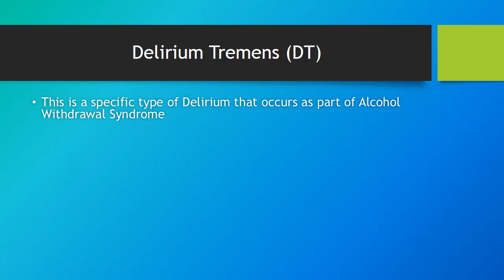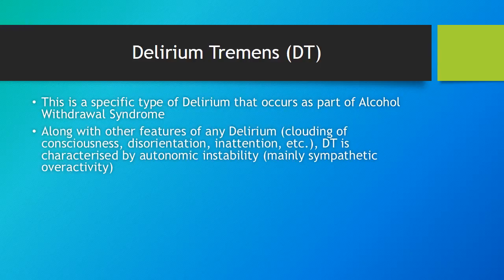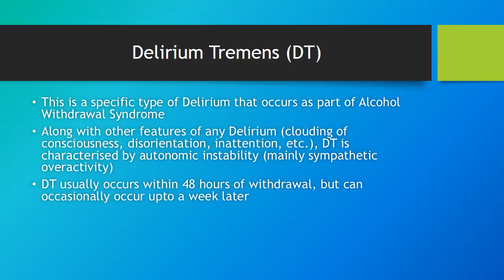The common signs and symptoms of alcohol withdrawal syndrome include tremors, sweating, insomnia, nausea and vomiting, anxiety, restlessness, agitation, palpitations and tachycardia, and headache. Hallucinations or illusions can be visual, auditory, tactile, etc. Convulsions in the form of grand mal seizures can also occur. Delirium tremens or DT is a specific type of delirium that occurs as part of alcohol withdrawal syndrome.